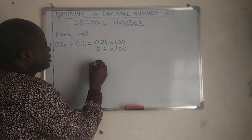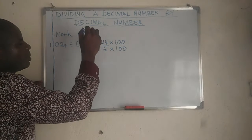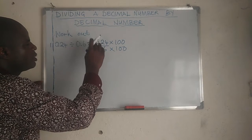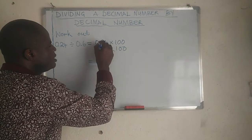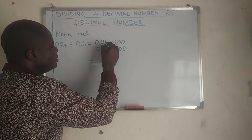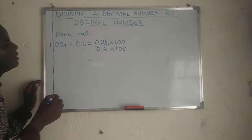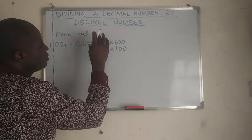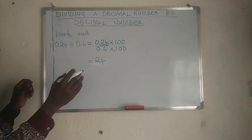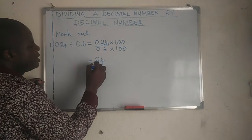So this equals 0.24 multiplied by 100. That means the decimal point will move one, two places. So 0.24 times 100 equals 24.